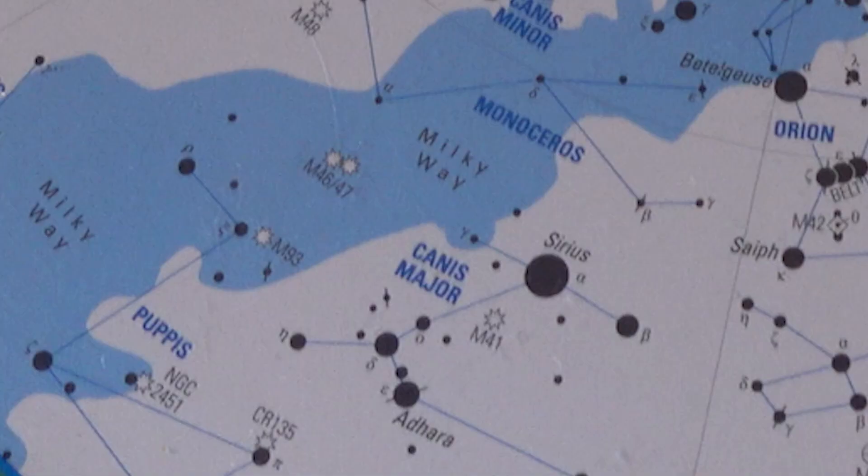Some things on the chart are just numbers only, and those are objects such as star clusters, galaxies, and nebulae from the New General Catalog, or NGC.